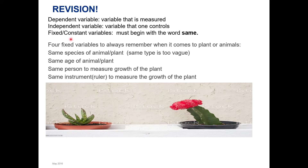You are asked a lot about fixed or constant variables — they may also use the word controlled variables. These variables always begin with the word 'same.' I always teach my kids that when it comes to plants or animals, always use same species of the plant or same species of the animal. For example, same species of cactus, same species of piglet. Be specific — don't just say same species of the animal. Using the word 'type' is too vague.